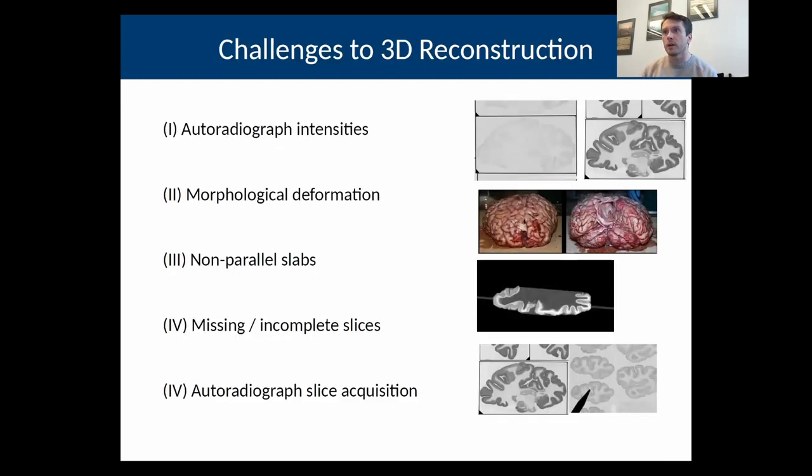There are some important problems or limitations that have to be overcome in order to reconstruct these two dimensional images into 3D. One problem is the obvious differences in intensities between adjacent images. There's a lot of morphological deformations because the brains had to be acquired without fixing, which causes problems. The slabs are cut at slightly non-parallel angles to one another, so each slab has to be processed independently.